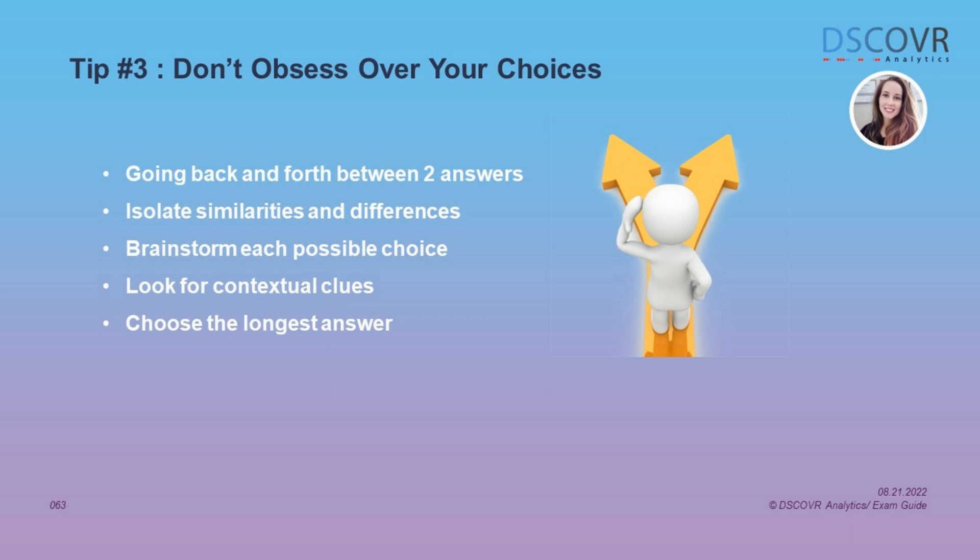If you come across an answer that is noticeably longer than the other choices, it's likely the correct answer. When creating multiple-choice tests, test makers have to make sure the right answer is undeniably correct, and this usually requires some qualifying language, which is not necessary with wrong answers.